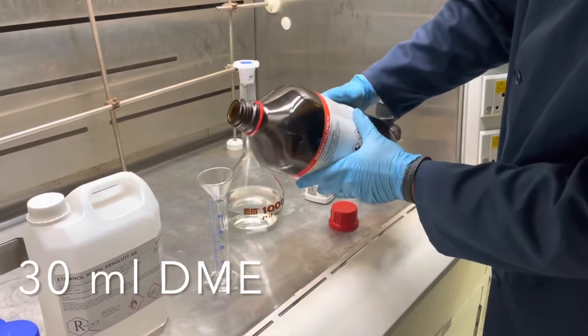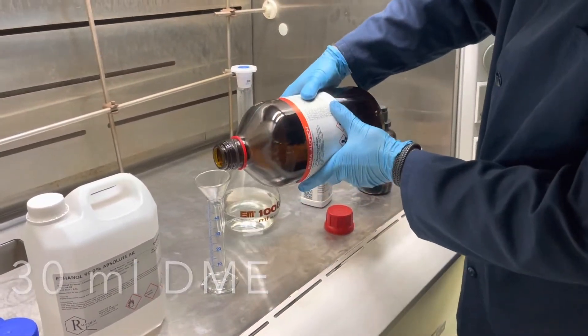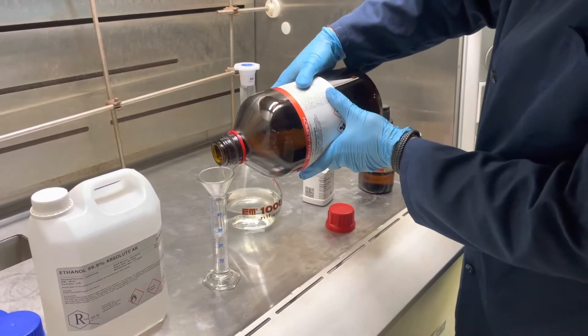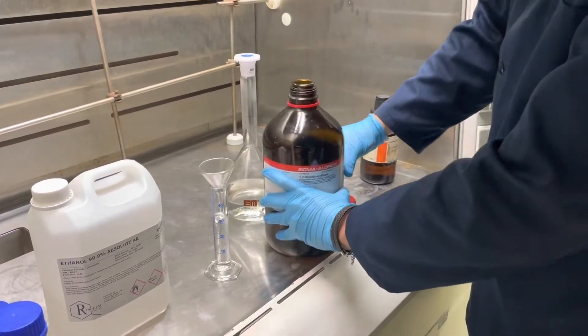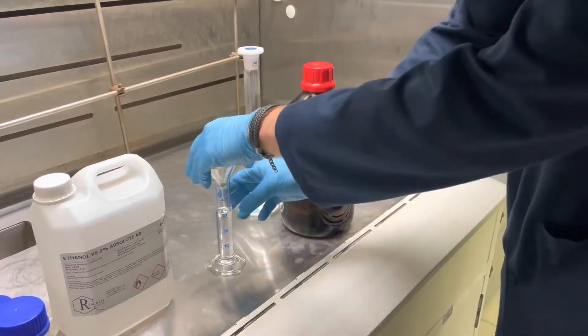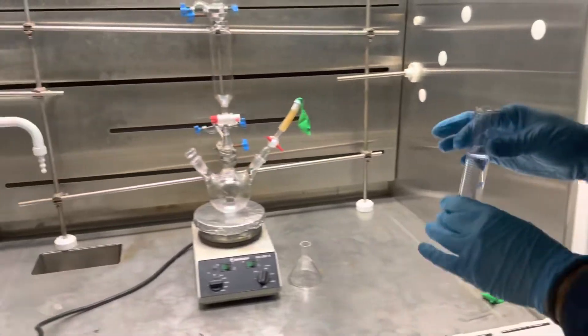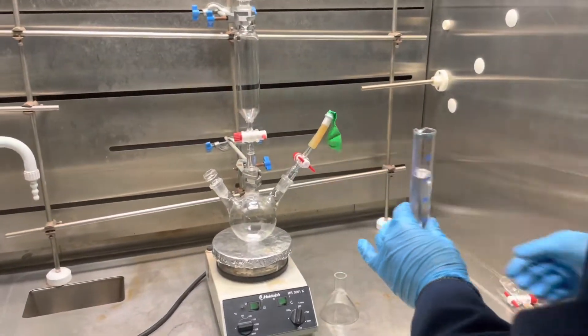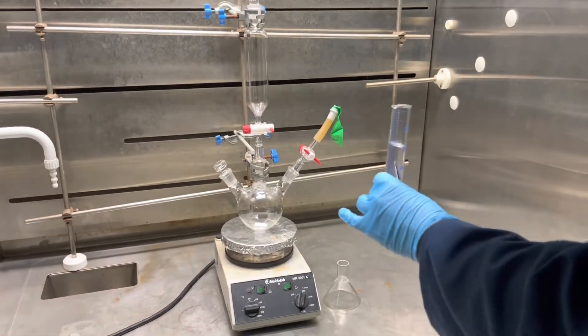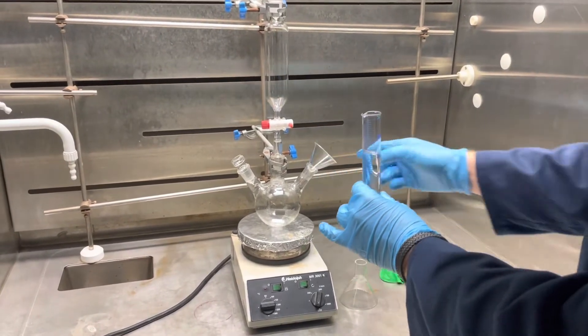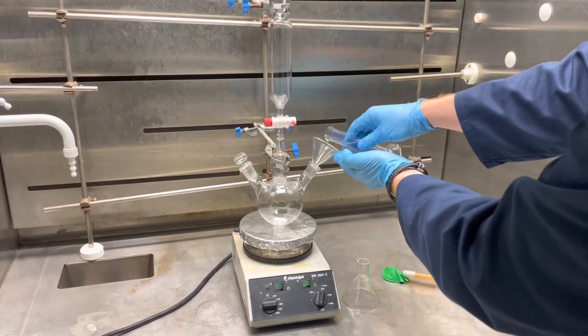Measure 30 ml of DME solvent to add to your three-neck flask. Then using the same funnel you will transfer the DME from your measuring cylinder to your flask, as shown here.